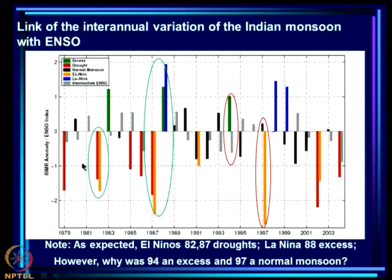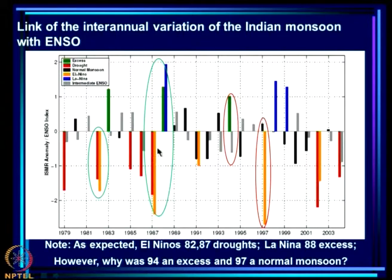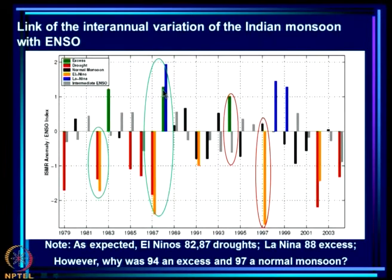Looking at the known link between ISMR and ENSO: in 1982 there was an El Niño event — highly unfavorable ENSO — and a drought, as expected. In 1987 we had an El Niño and a strong drought; in 1988, excess rain associated with La Niña. These three years demonstrate the known link between ENSO and monsoon: high propensity for droughts during El Niño years and high propensity for excess rainfall during La Niña years.